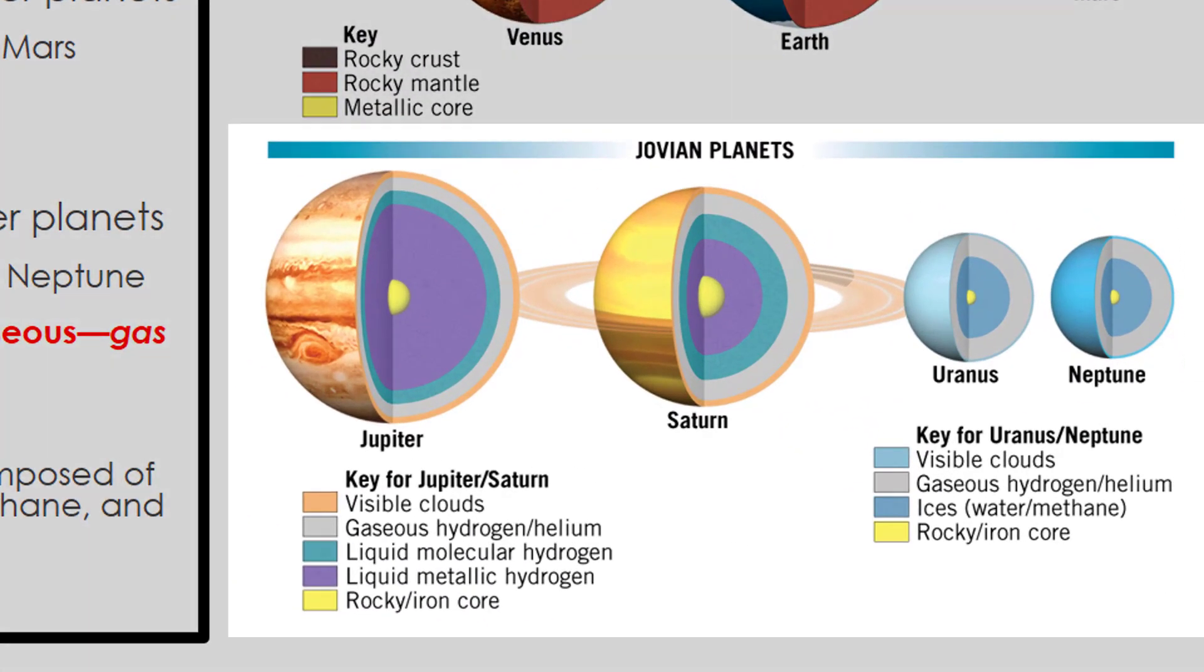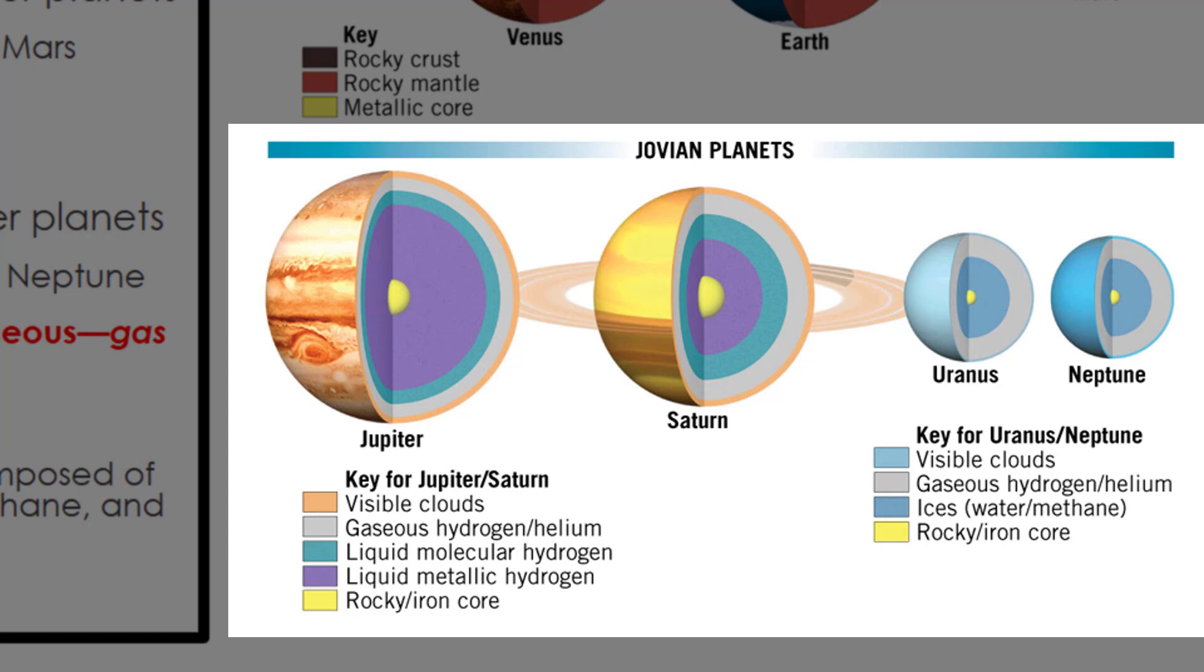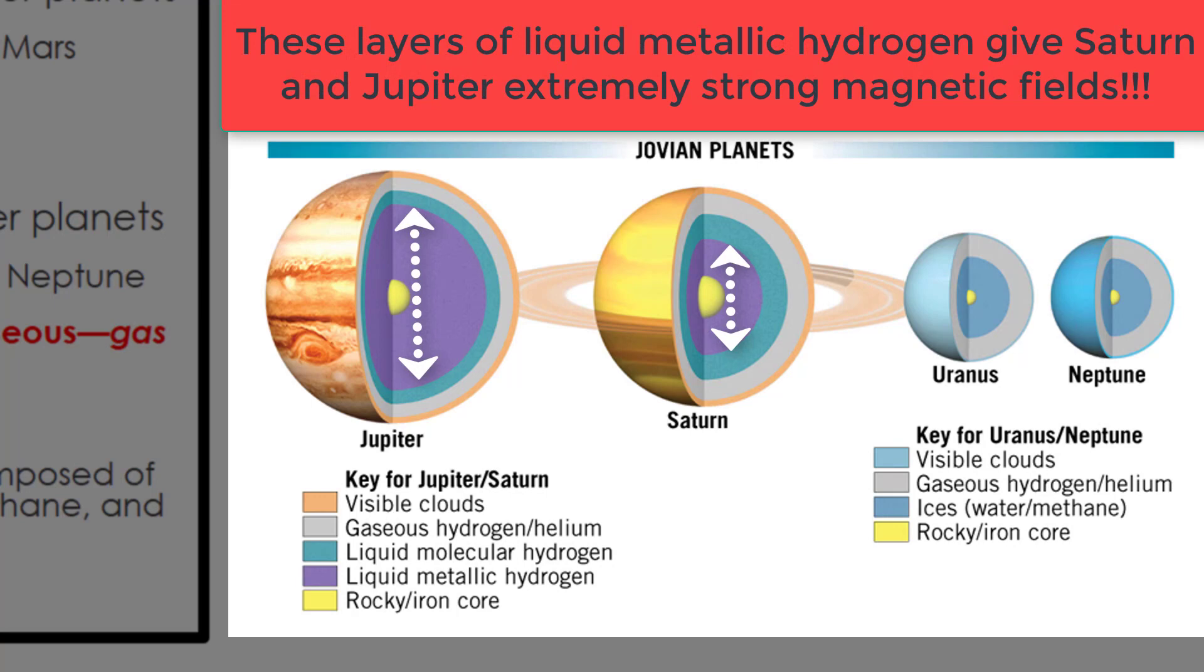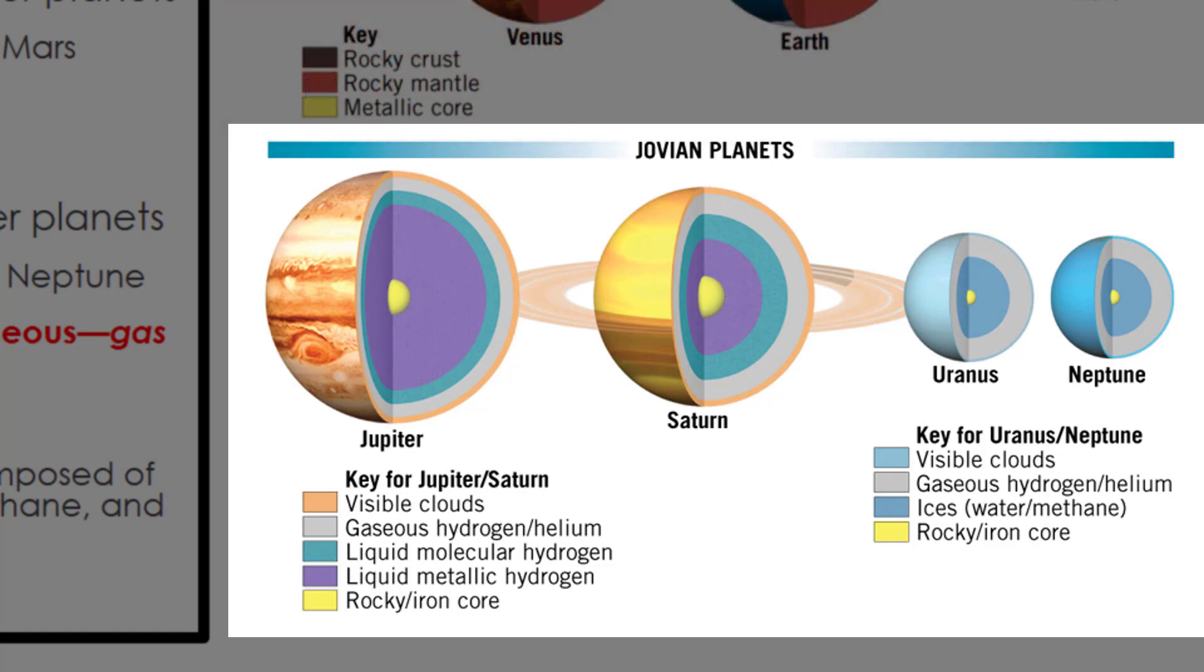If we take a look at the internal structure of the four Jovian planets, we see some really unique features. All four have rocky iron cores, but those iron cores are relatively small compared to the rest of the interior. Jupiter and Saturn, the two biggest planets in our solar system, have a region of liquid metallic hydrogen just outside of their cores. In its natural state, hydrogen's a gas, but in regions of extremely high temperature and pressure, hydrogen exists in a liquid metallic state in the interiors of these two planets. Just outside of the liquid metallic hydrogen region, there's a region of liquid molecular hydrogen, and we also find layers of gaseous hydrogen and helium, and then clouds.